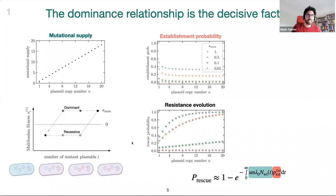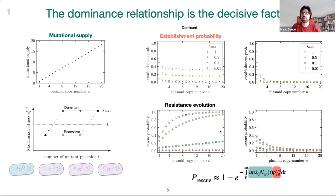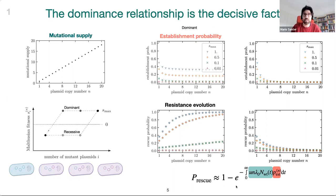In the second example, I show the same result for a recessive mutation, meaning only a cell with exclusively mutant copies is resistant and has a positive Malthusian fitness. For this, the establishment probability shows a strong decline over the plasmid copy number, which leads to a general trend of decreasing rescue probability with plasmid copy number. This convinces us that the dominance relationship is actually a decisive factor for resistance evolution on multicopy plasmids.